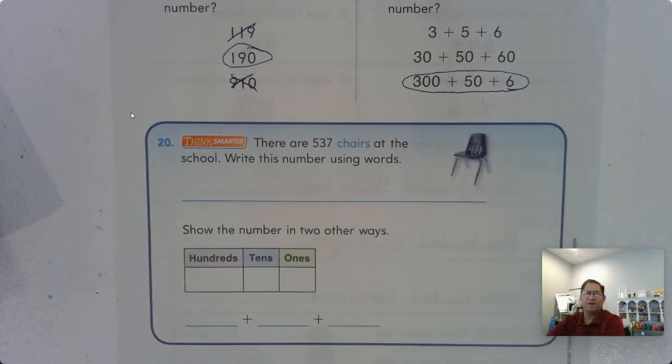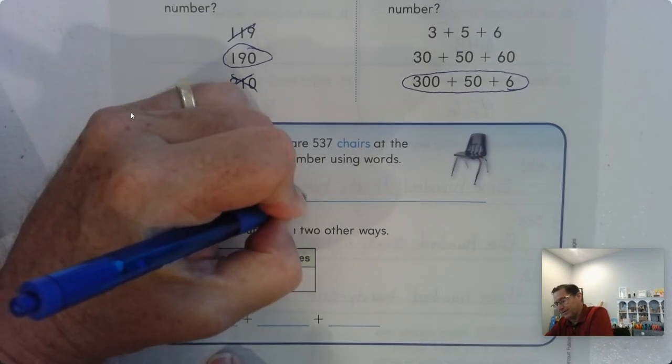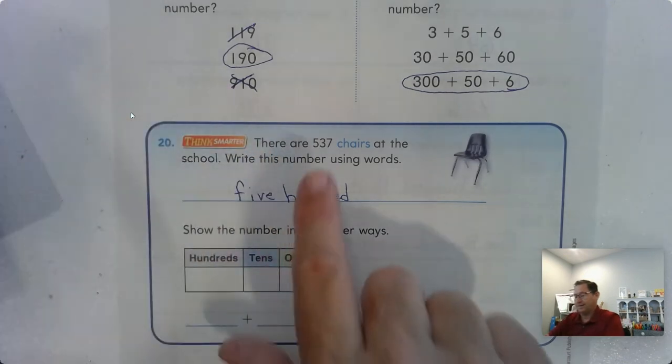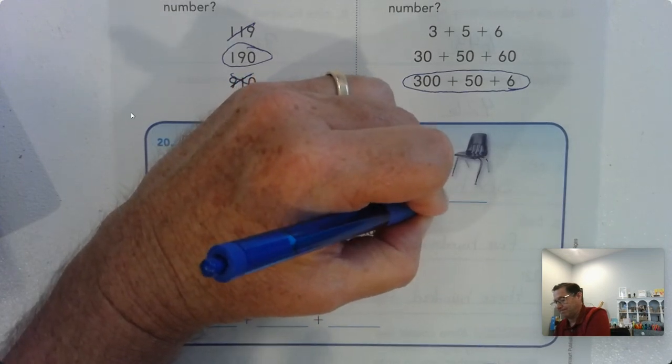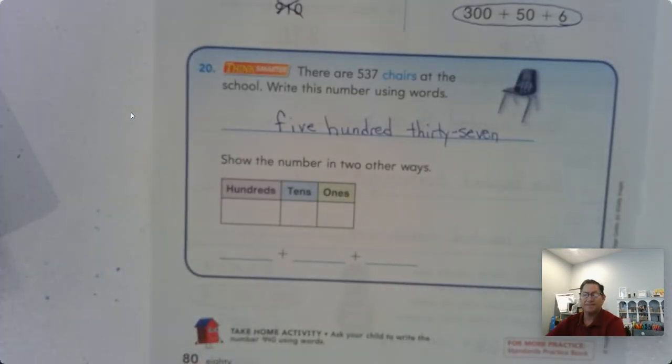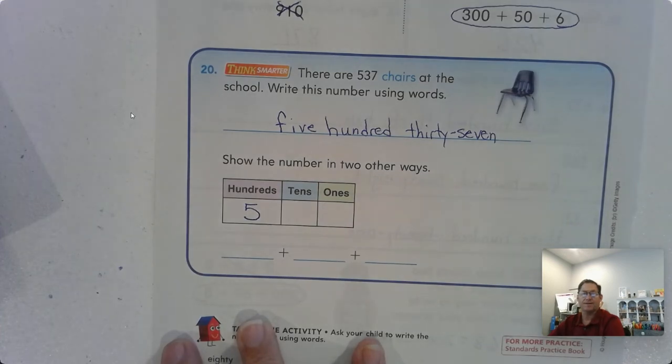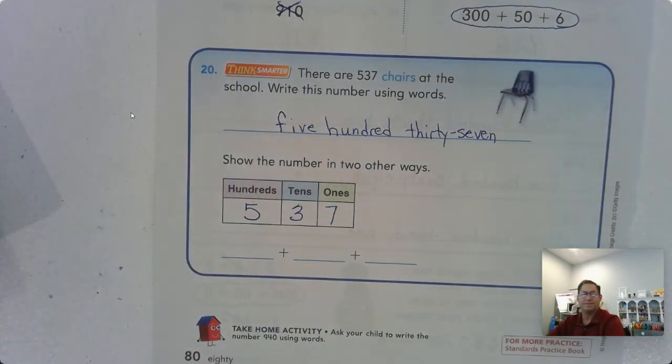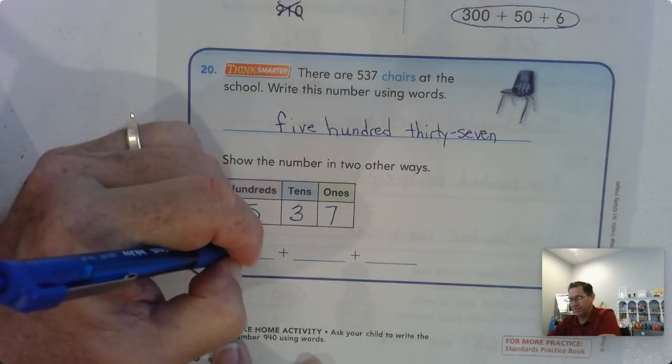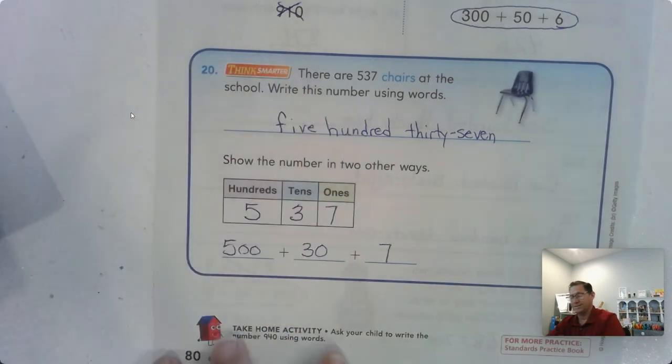Number 20. There are 537 chairs at the school. Write this number using words. Start with the hundreds. We have how many hundreds? We have 500. And then look at the tens and ones, we have 37. Let's write this number in two different ways. We could use a place value chart. How many hundreds do we have? Five hundreds. How many tens? There's 30, so three tens is 30. And there are seven ones. So five hundreds plus the tens plus the ones, 537.